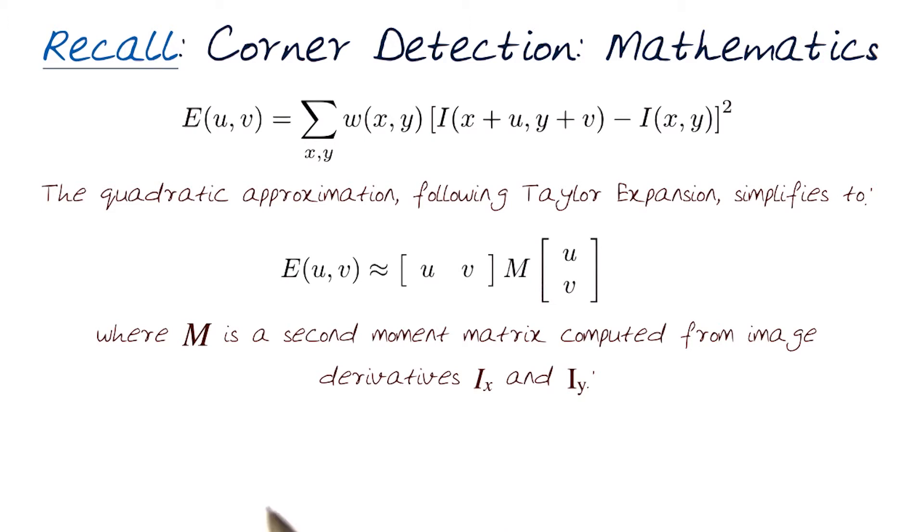M is the second moment matrix computed from an image using derivatives I_x and I_y. We compute the derivatives of an image,